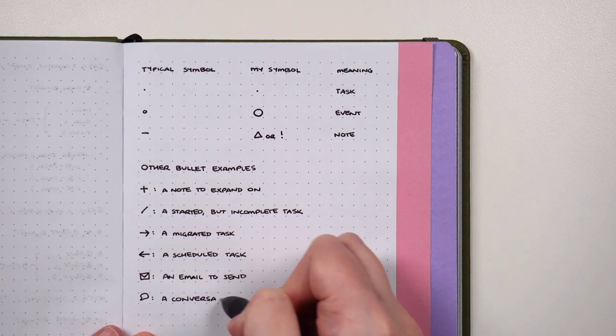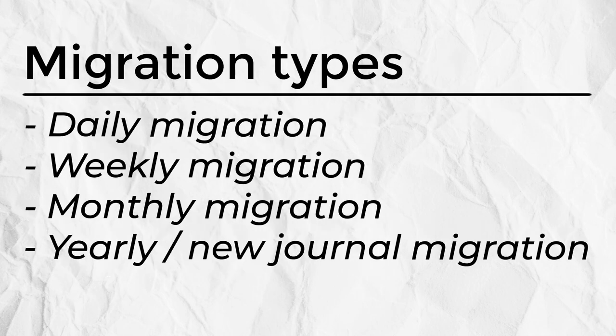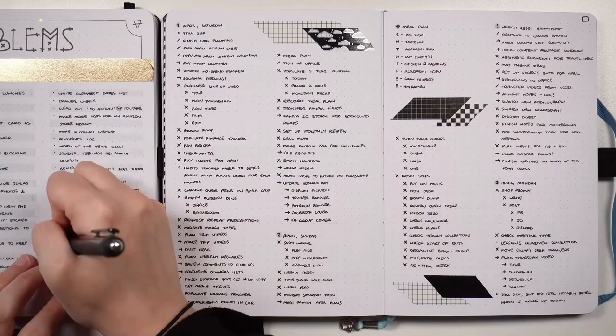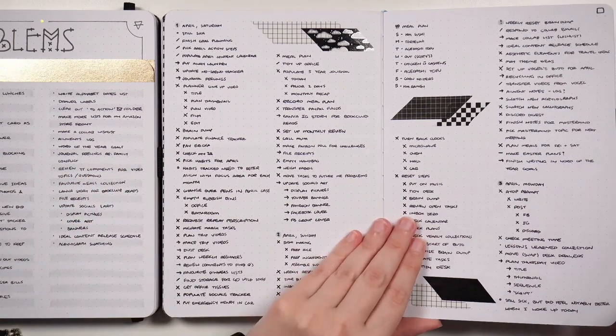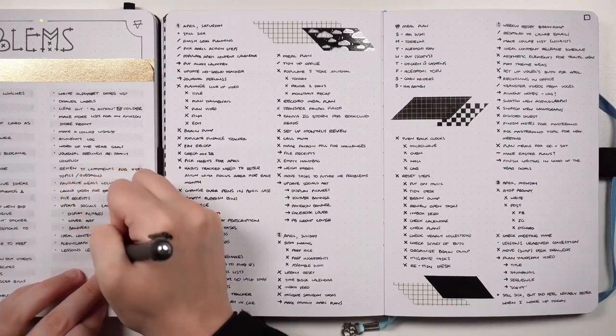Migration is the process of reflecting on open bullet journal entries using the migration filter and transferring entries to other places. Migration is done on a daily, weekly, monthly, and new-journal basis. If an entry has been moved to a different place in your journal, it has been migrated — for instance, moving it from the monthly log to a daily log. Entries moved into the future log during migration are called scheduled rather than migrated, though using migrated is fine too.